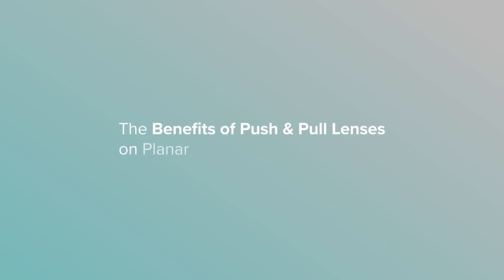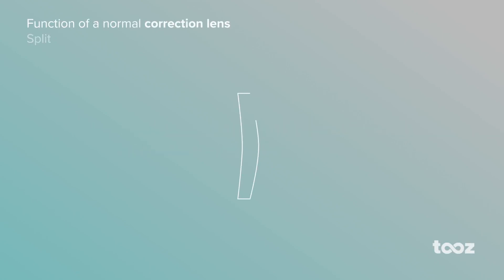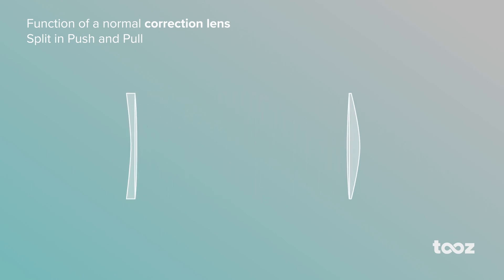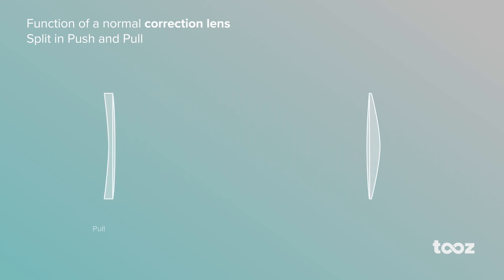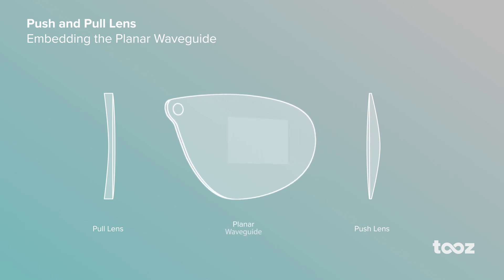How ametropic users benefit from push and pull lenses on planar waveguides. In the first step, a spectacle lens design is cut lengthwise. This creates a push and a pull lens. The planar waveguide is then inserted between these two separate lenses.